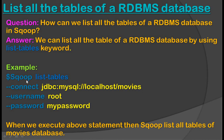The example command is: sqoop list-tables --connect jdbc:mysql://localhost/movies --username root --password mypassword. When we execute this statement, it will list all the tables of the movies database.